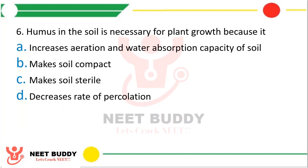Question 6: Humus in soil is necessary for plant growth because it — option A: increases aeration and water absorption capacity of soil, option B: makes soil compact, option C: makes soil sterile, option D: decreases the rate of percolation. The correct answer is option A — it increases the aeration and water absorption capacity of the soil.